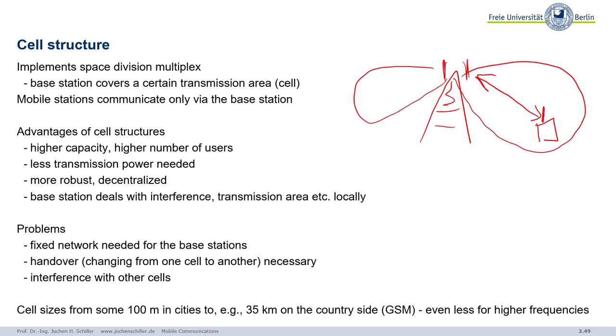Without cells, you would need a huge antenna in the middle of a country with extreme high transmission power to cover the whole country. Think of attenuation and all these effects — we'd have problems with capacity and higher numbers of users. So we need space division multiplexing using many different cells. The more antennas we have, the less transmission power we need, following the rule of signal strength dropping by a factor of 1/r^3.5 to 4.5.